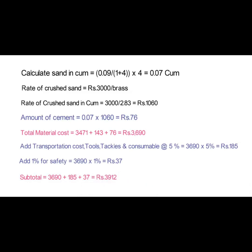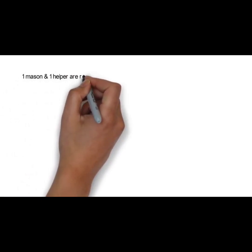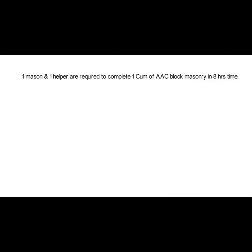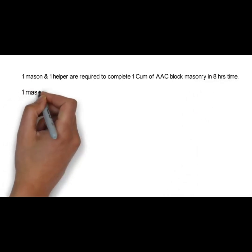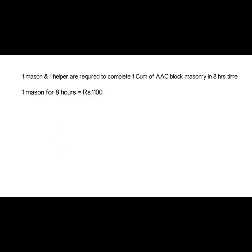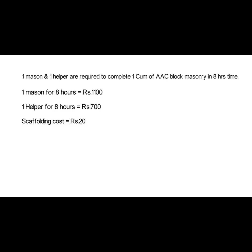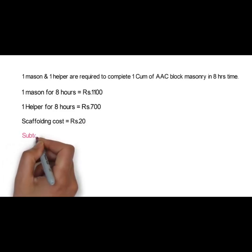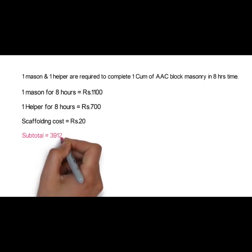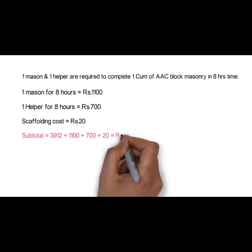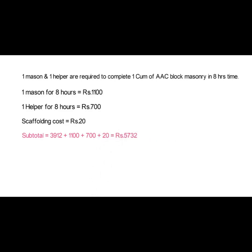Now coming to the labor part. One mason and one helper are required to complete 1 cubic meter of AAC block masonry in 8 hours. One mason for 8 hours: 1,100 rupees. One helper for 8 hours: 700 rupees. The scaffolding cost shall be 20 rupees per square meter. The subtotal of material plus labor is 3,912 + 1,100 + 700 + 20 = 5,732 rupees.